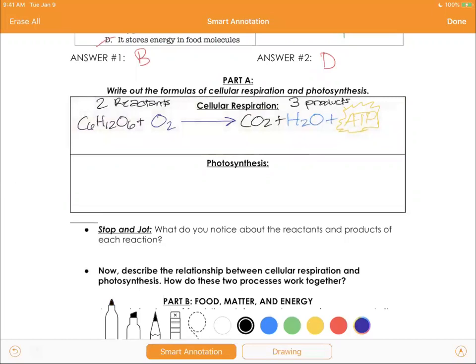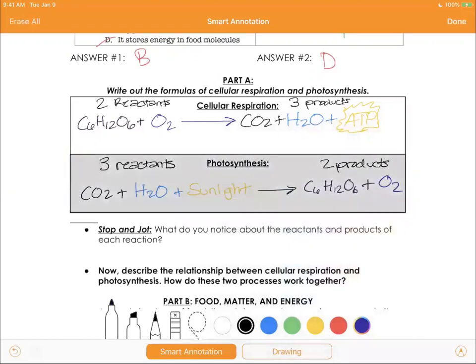Photosynthesis - there's three products. Now in photosynthesis, we have CO2 plus H2O, which is water, plus our energy source, which is sunlight. So not ATP, but sunlight. And that's going to yield glucose, which is C6H12O6 plus oxygen, which is O2. Again, three reactants, two products.